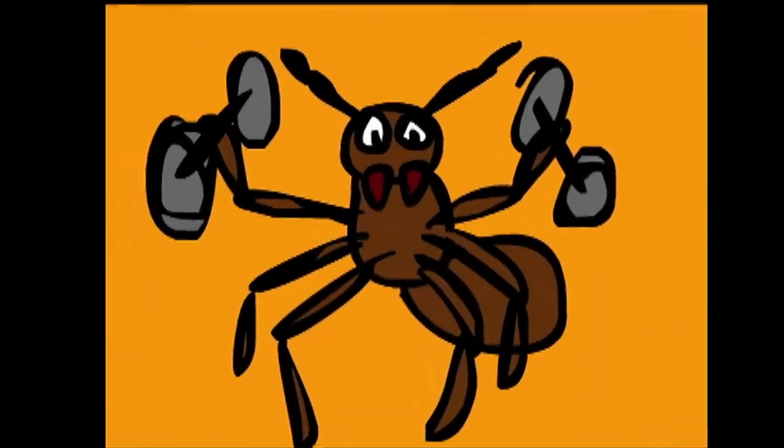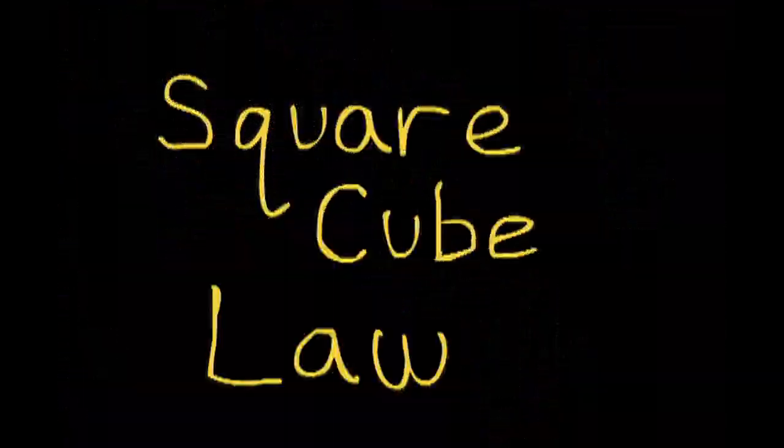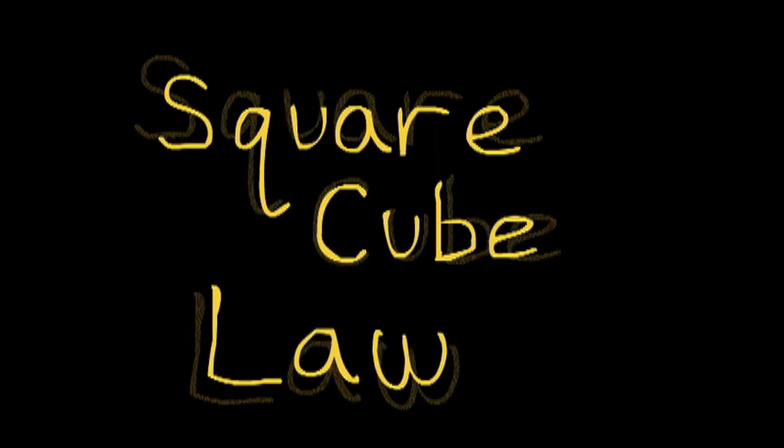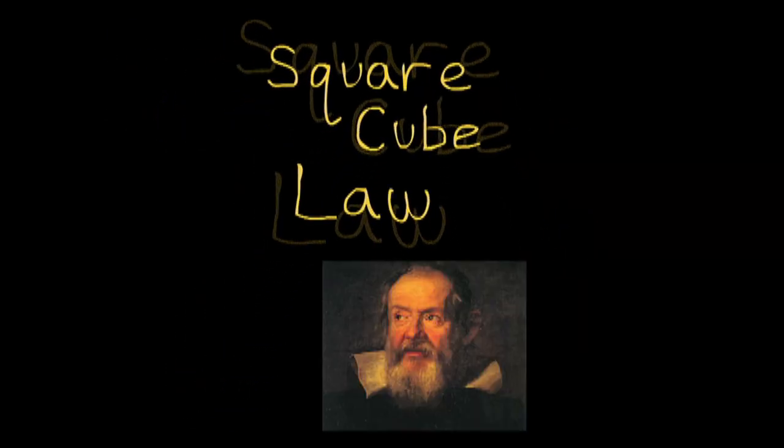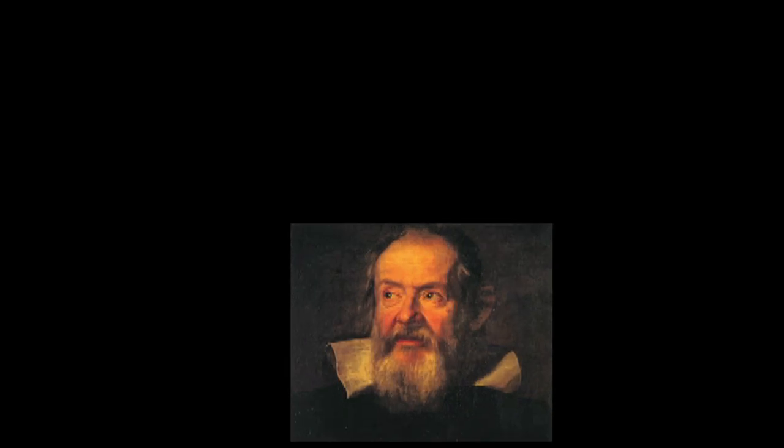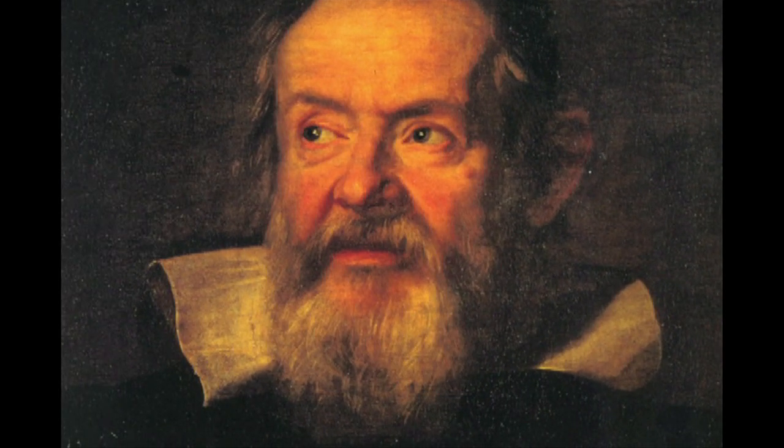Why is an ant so strong? First, we need to understand a principle called the square cube law, which Galileo came up with over 400 years ago. He observed that when an object grows in size, its volume increases faster than its area.